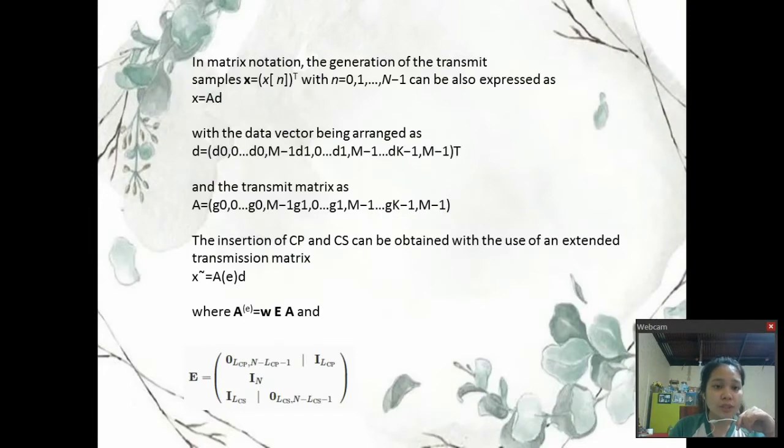In matrix notation, the generation of the transmit samples X equals XN raised to T can be expressed as X equals AD with the data vector arranged as D equals D0, etc. and the transmit matrix as A equals G0 up to GK-1, M-1. The insertion of the CP and CS can be obtained with the extended transmission matrix X equals AED where A equals WEA.